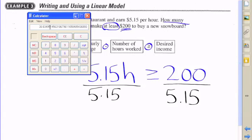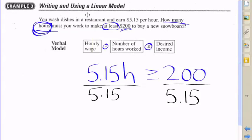It's like 38.83, so it's roughly 39 hours. You pretty much have to work at least 39 hours, or to be more specific, 38.83 hours. So h has to be greater than or equal to 38.83 hours.